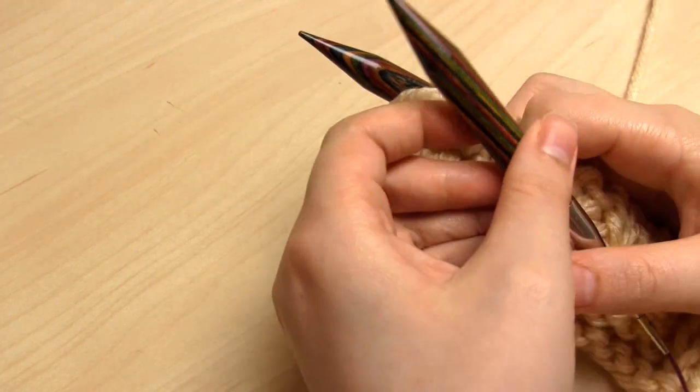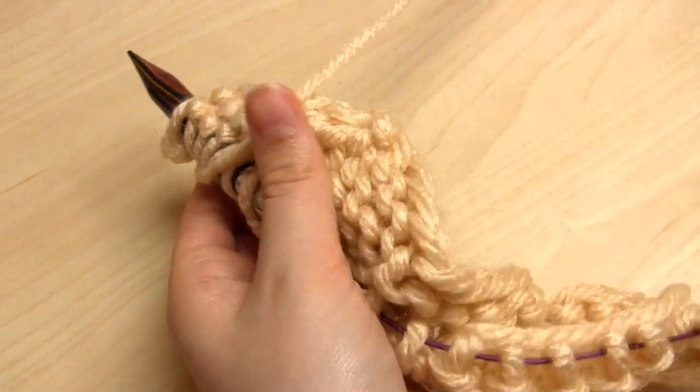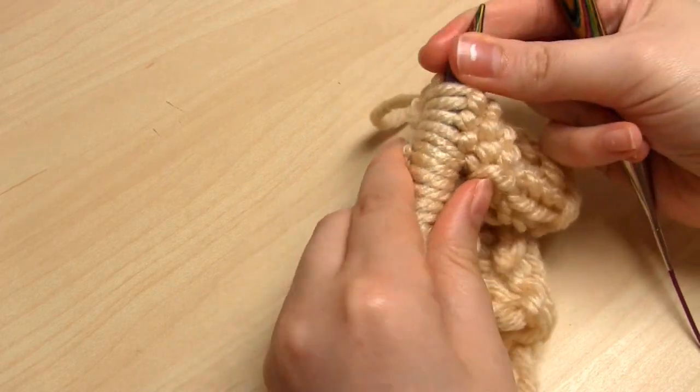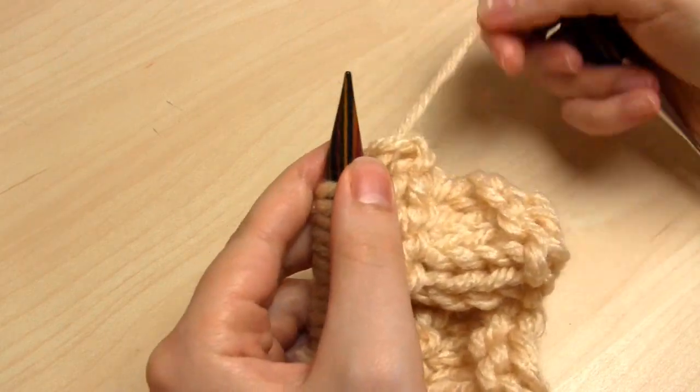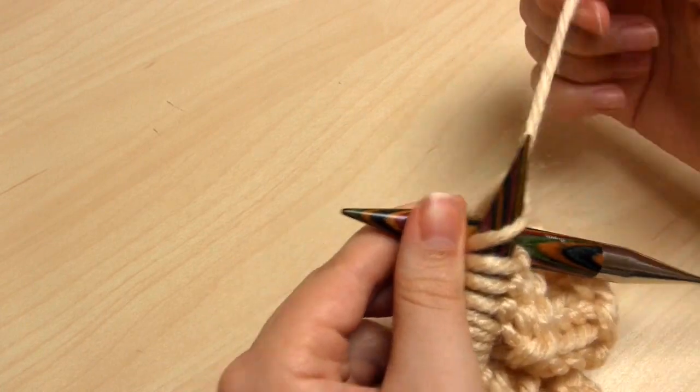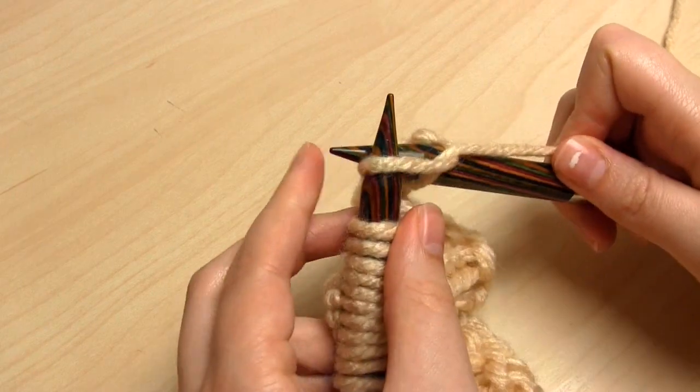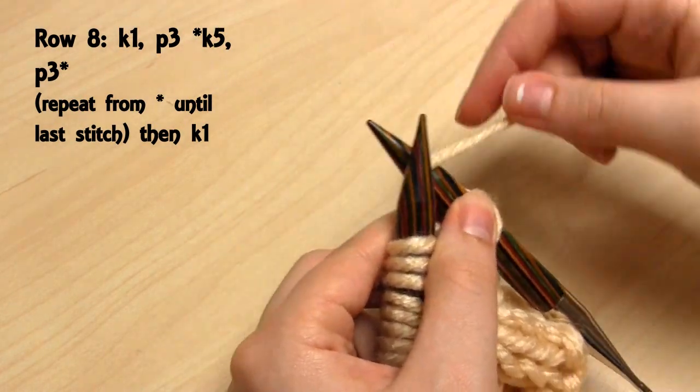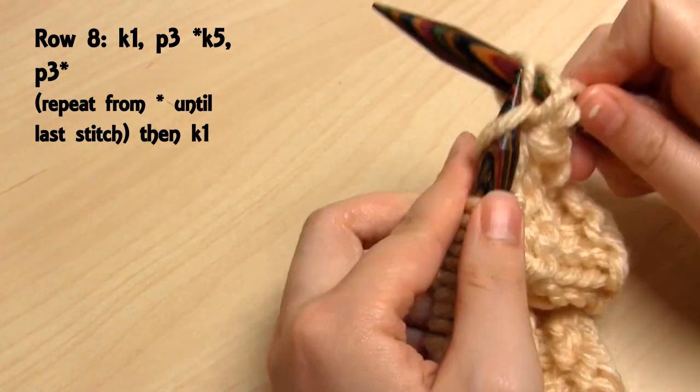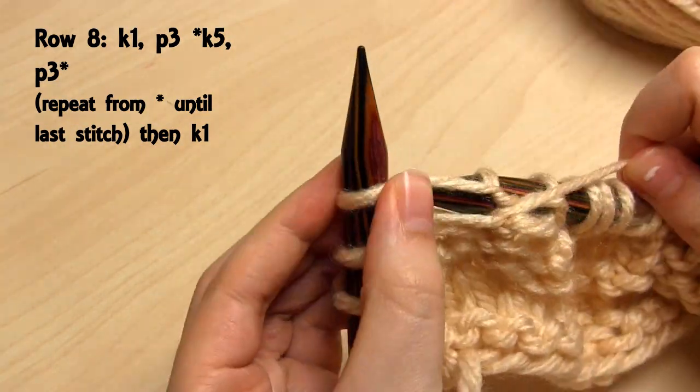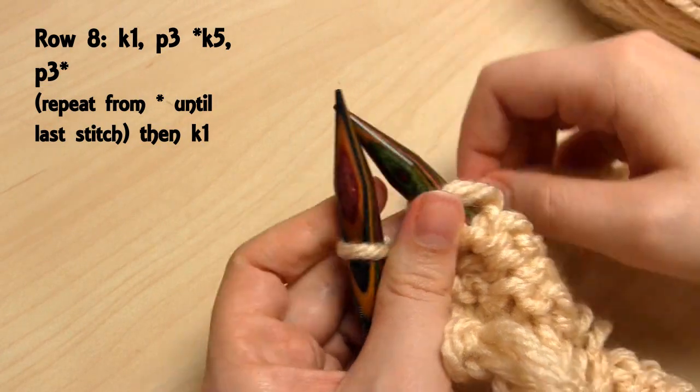And then we're finally onto the last row, row 8. And this is the same as row 6. So once again, we're going to do a knit stitch for the first and last stitches on the row. So we'll do 1 knit. And then repeat 3 purl, 5 knit, 3 purl, 5 knit, until you're 1 stitch away from the end of the row. And that last stitch is just a knit stitch.